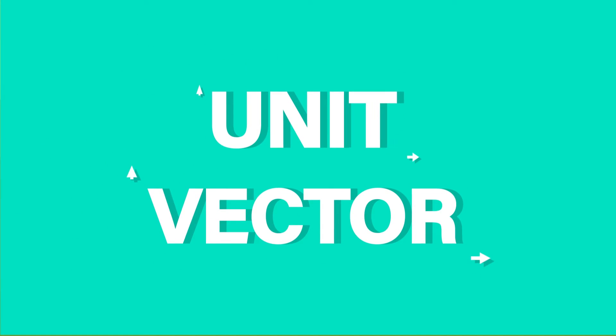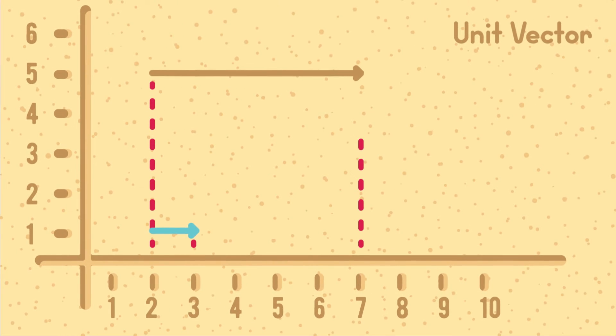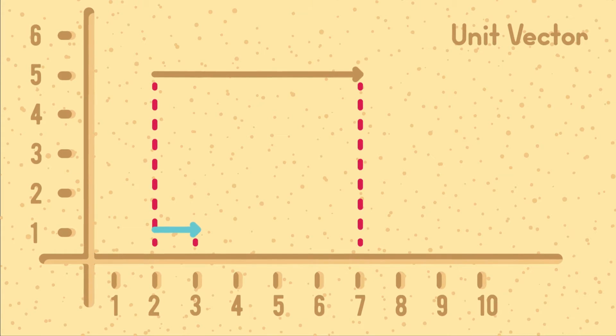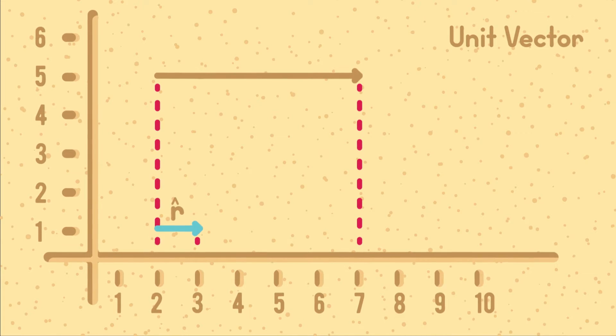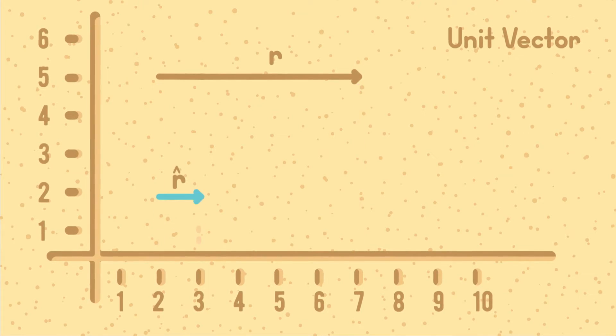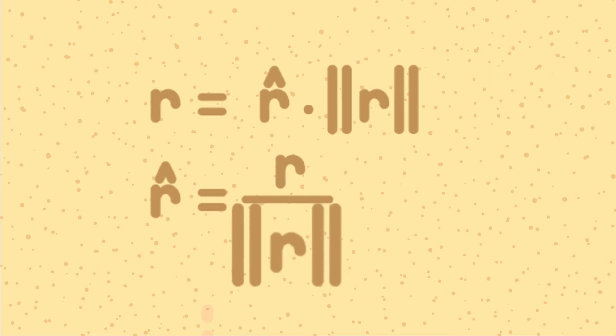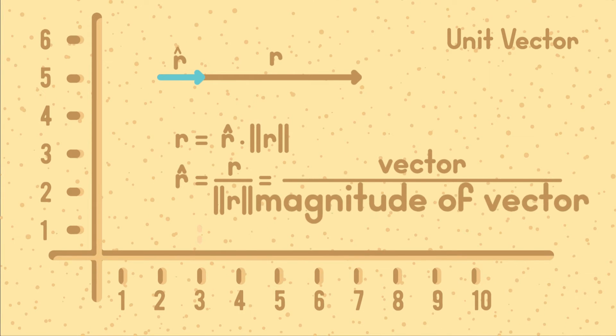Unit vector. A vector whose magnitude is 1 and directed along the direction of a given vector is called the unit vector of the given vector. A unit vector is usually denoted by a letter with a cap over it. For example, if r is the given vector, then r hat will be the unit vector in the direction of r such that r equals r hat times norm of r. Or, r hat equals r divided by norm r. Unit vector equals vector divided by magnitude of the vector.